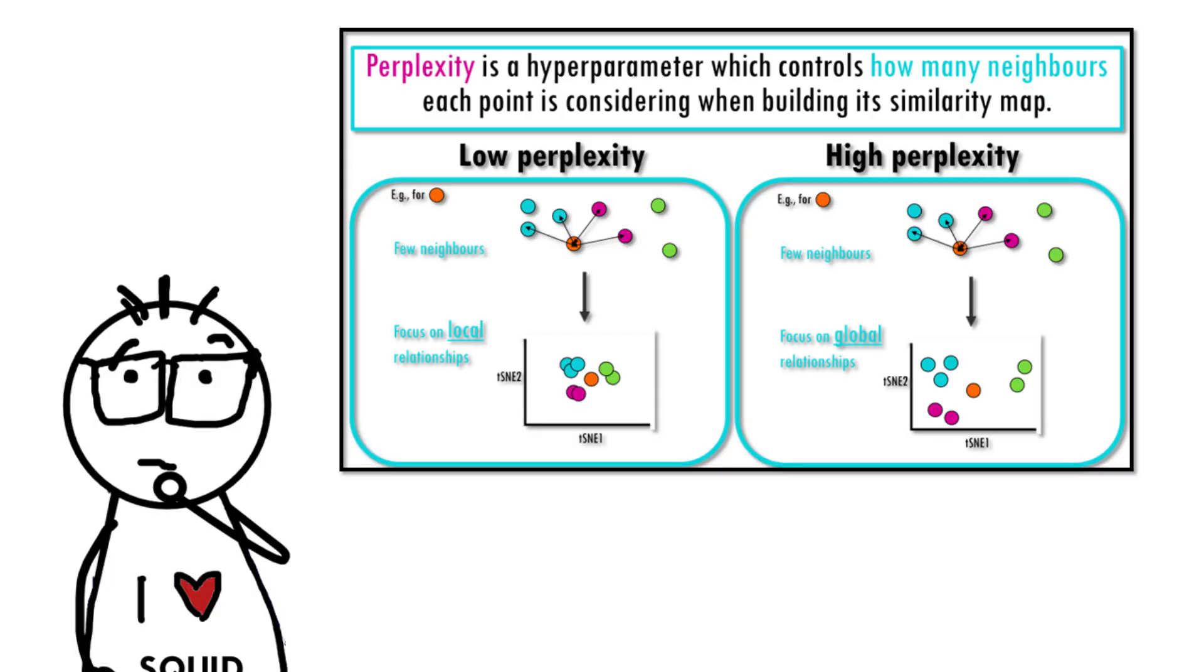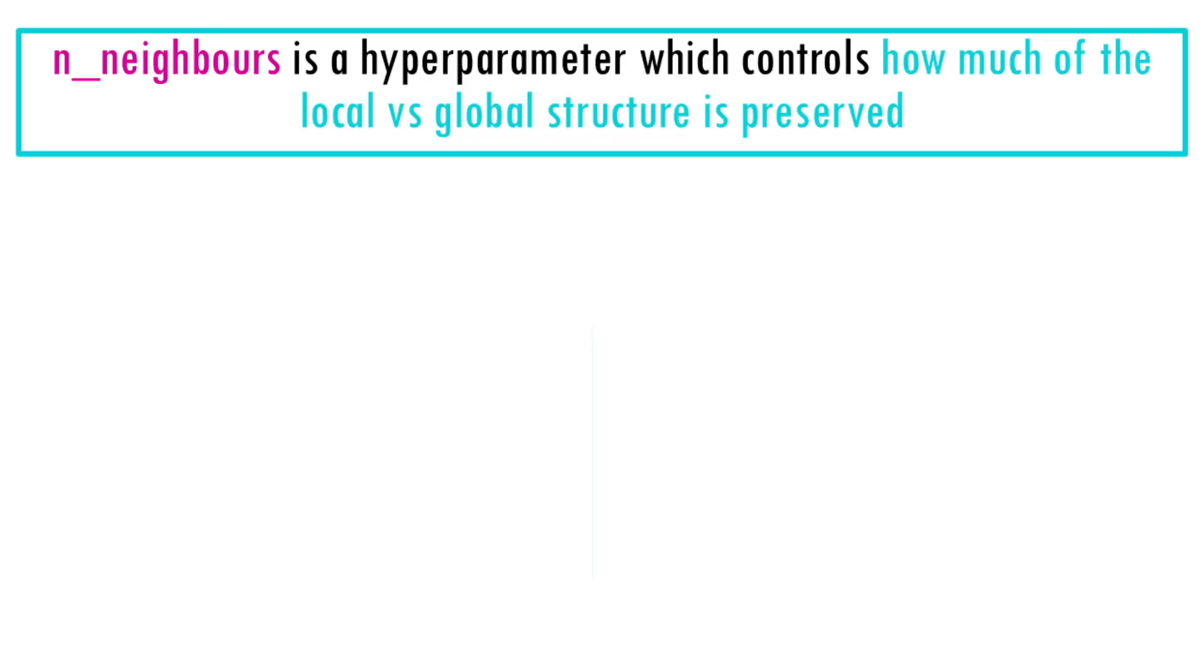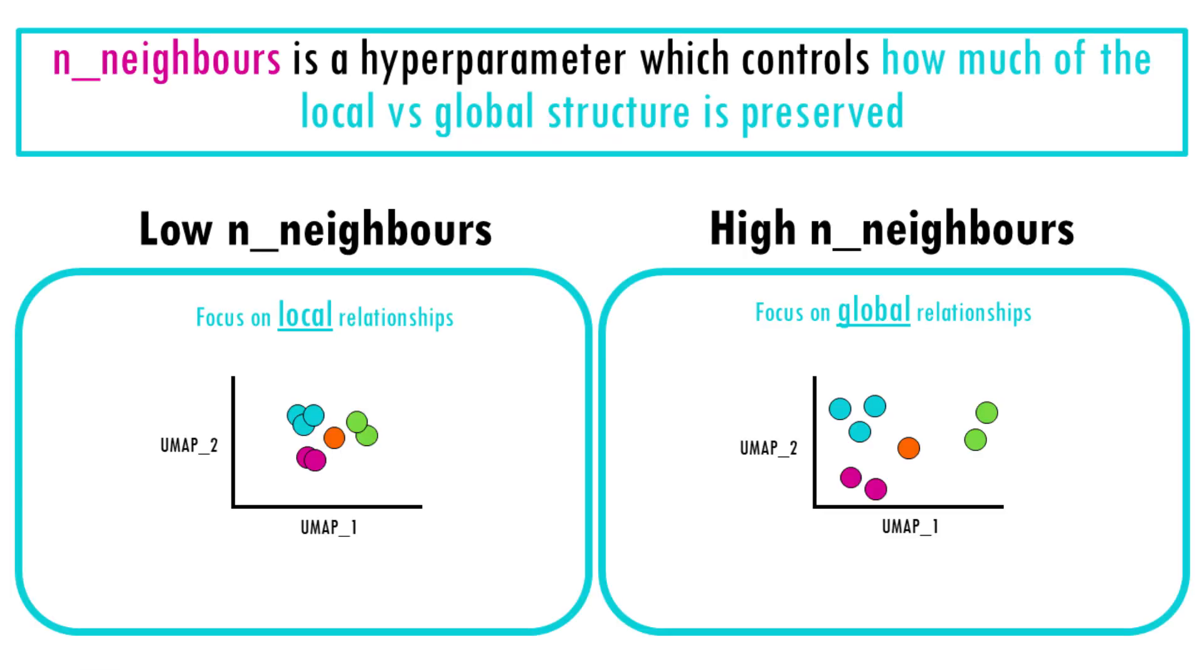Now, remember perplexity in TSNE? Well, UMAP has two hyperparameters that control the results you get. The most important parameter is n_neighbors, which controls how much of the local versus global structure is preserved. How does it do that?